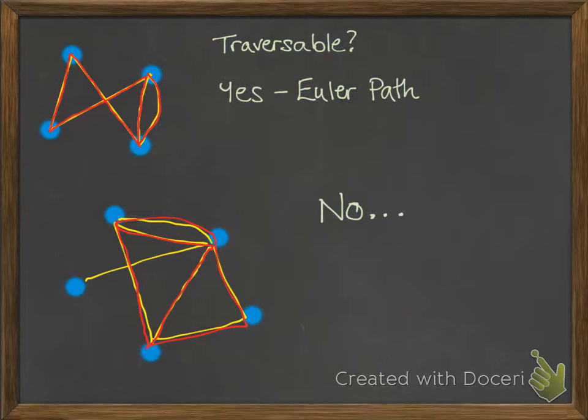So this one is not traversable. But how can we say that it's not traversable unless we try every single path? This is where Euler comes in. He came up with a solution to this.